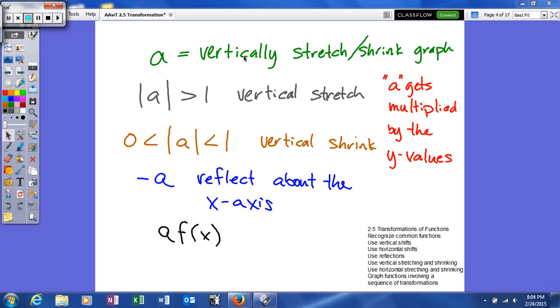Now what that means is, where C and D just moved it either up or down if it were D, or left or right if we had a C, A is actually going to affect the shape of our graph. And not only is it going to affect the shape of our graph, but it's going to affect the shape vertically.